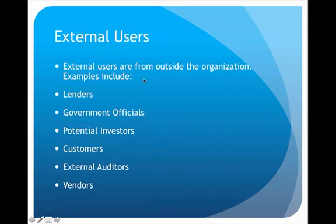We also have quite a few people who fall under the additional category of external users. These are the people who are outsiders — they do not actually work for the business, but they still rely on the information because they are still making decisions that do have an effect on the business. For example, lenders would be a classic example: if we apply for a loan, the lender is going to look at our financial statements.